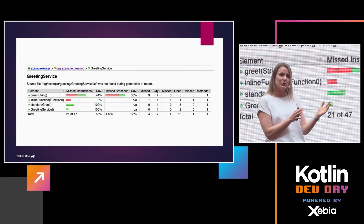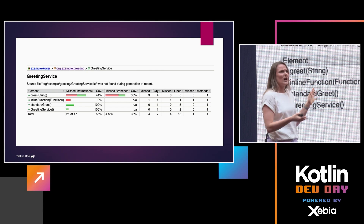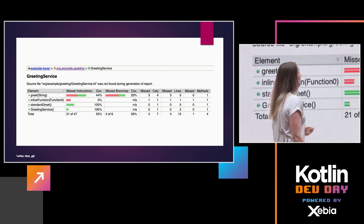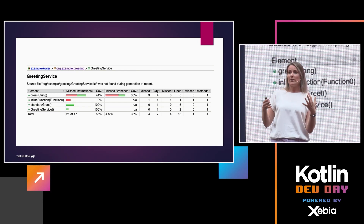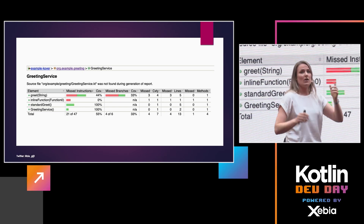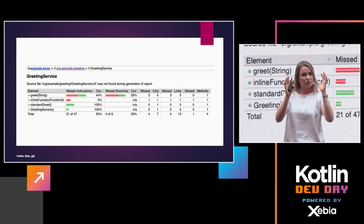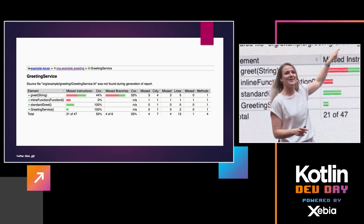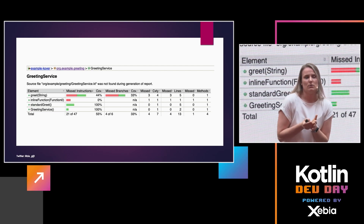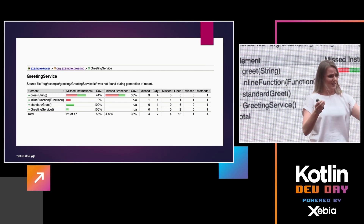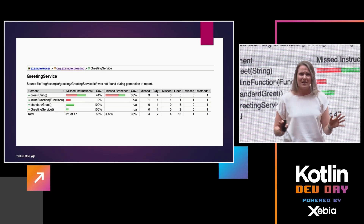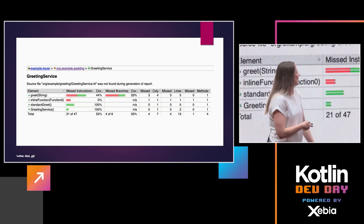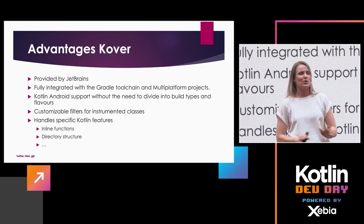You might also have noticed a weird-looking table in the JaCoCo report — no class names, no lines of code. That is mainly because Kotlin uses a Kotlin directory structure. Instead of having your org.example in your folder structure, you can just place that in your Gradle file and go directly to the GreetingService with a package there. But JaCoCo, being a Java tool, looks for org.example.greeting, and that package is not there — there's only a greeting package. It can't find it, so you get that weird-looking table.